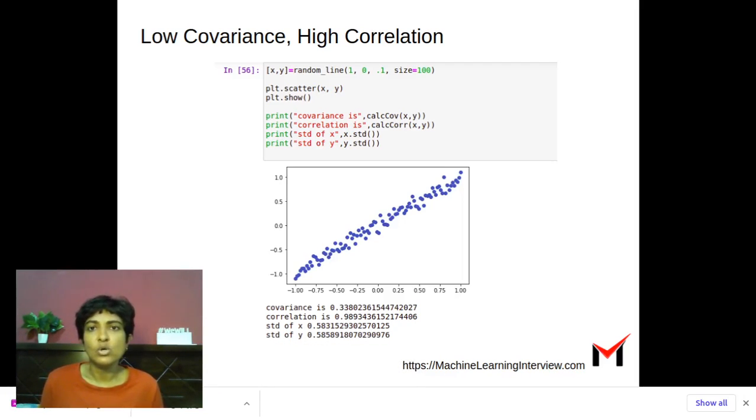Why is the covariance so low? So as we know, when we look at the formula of covariance, what we will end up seeing is that if the range of values of x and y is low, the covariance will be low. Which means that x and y are not very spread out in their respective directions.